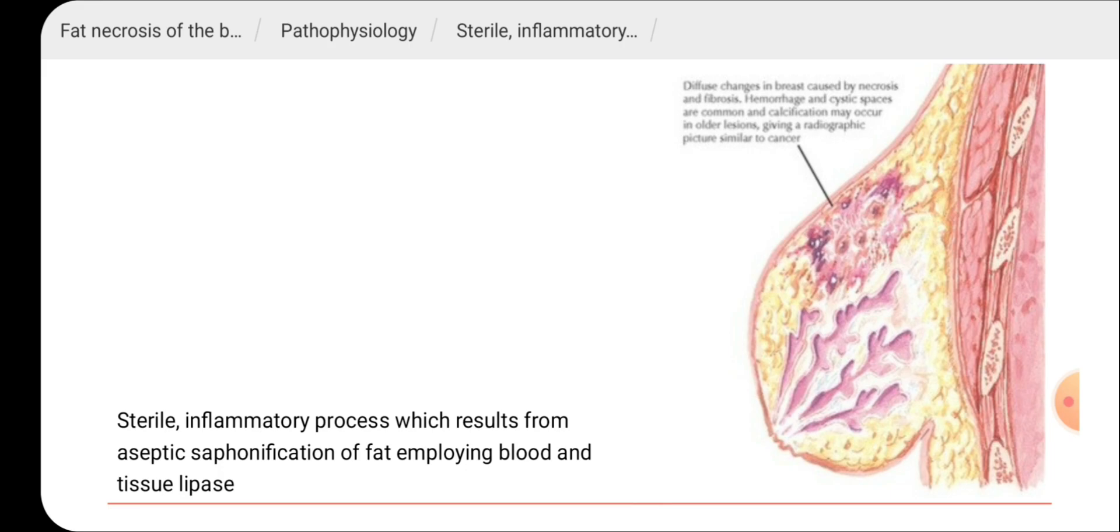There are diffuse changes in breast caused by necrosis and fibrosis. Hemorrhage and cystic spaces are common, and calcification may occur in older lesions, giving a radiographic feature similar to cancer.